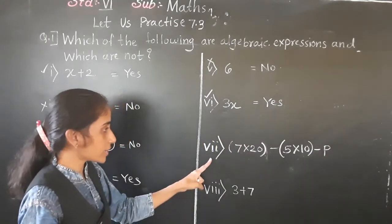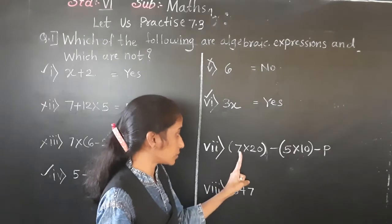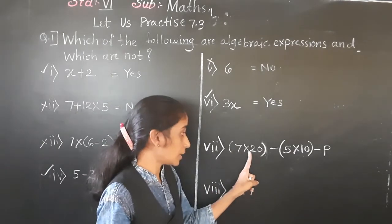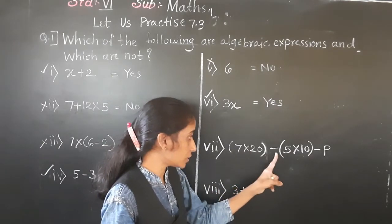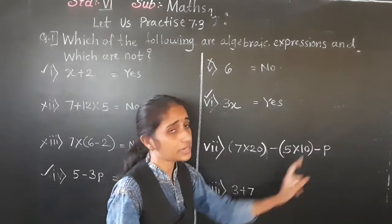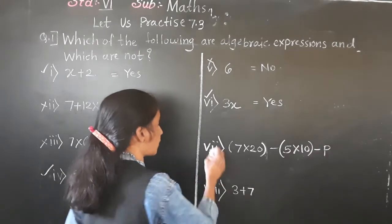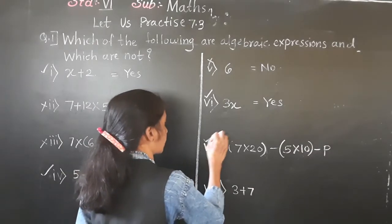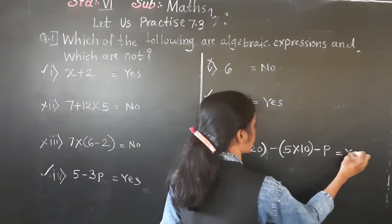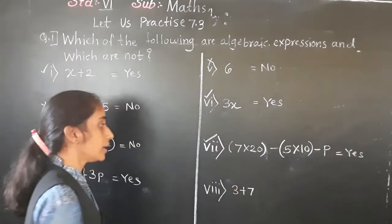The next example: numbers (constants) are given, operations including multiplication and subtraction are given, and a variable is also given. So this is also an algebraic expression — yes.